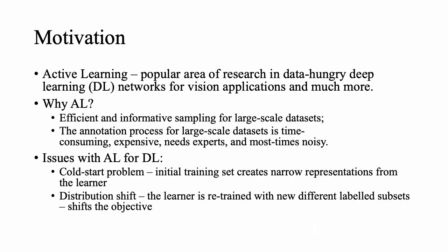Active learning has recently gained popularity for deep learning models, due to efficient and informative sampling, especially when the learner requires large-scale labeled datasets. Commonly, the sampling and training happens in stages while more batches are added. This overcomes the annotation process, which is time-consuming, expensive, requires expert knowledge, and is most times noisy.